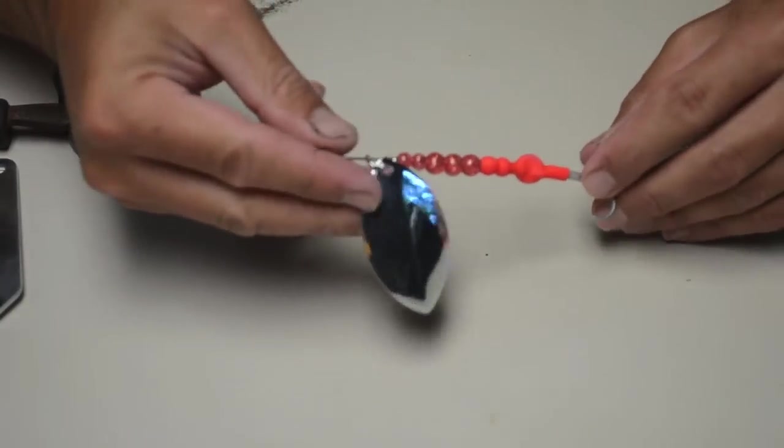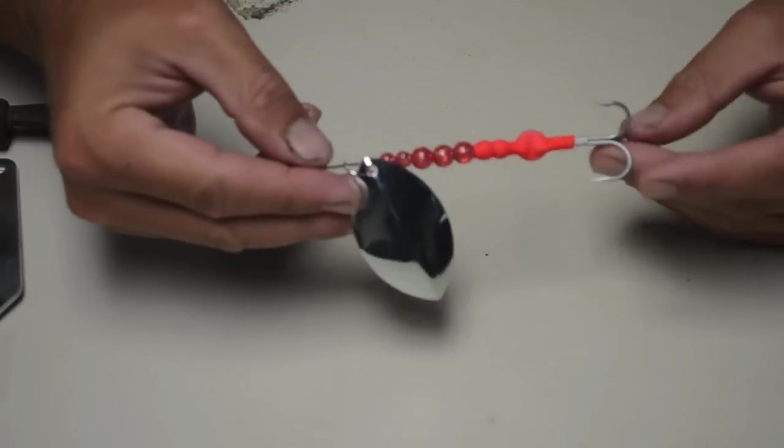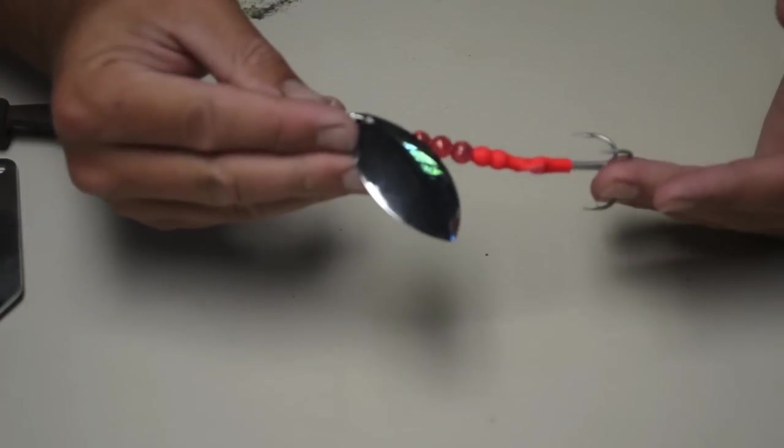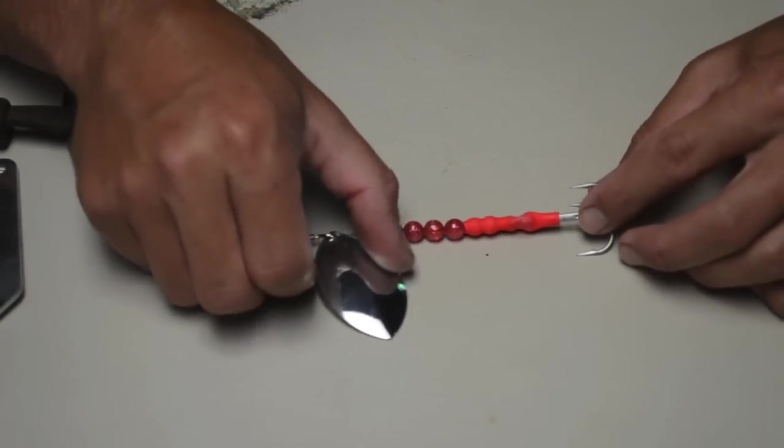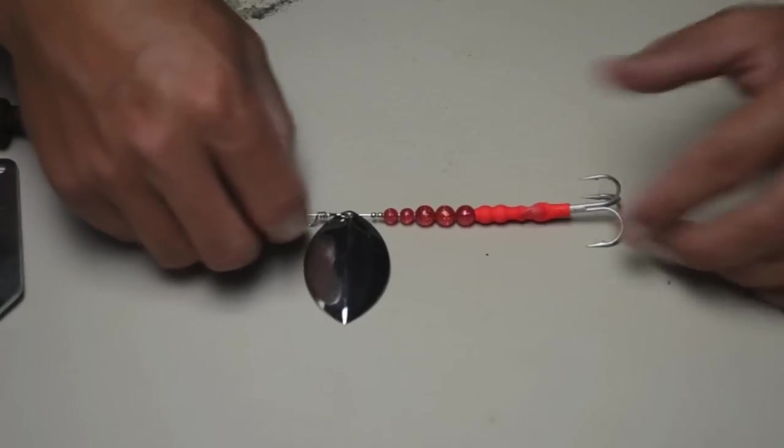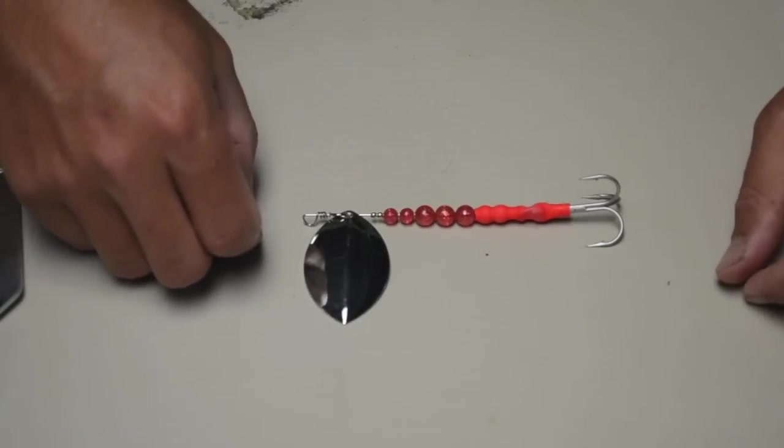For two bucks. This will kill lots of fish and it's very effective and affordable. Easy to make. You don't have to go and spend five, seven, ten dollars on these things at the store. You can make them for yourself for two bucks.